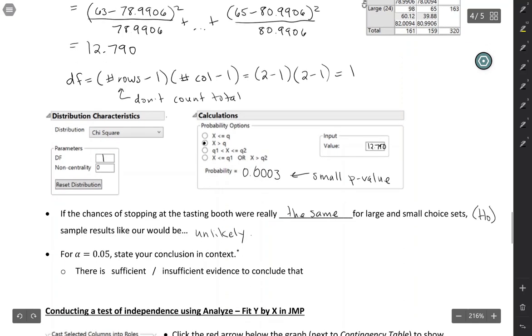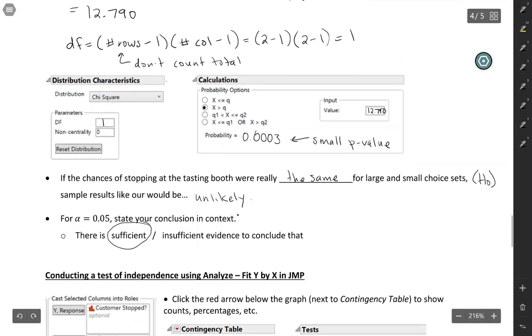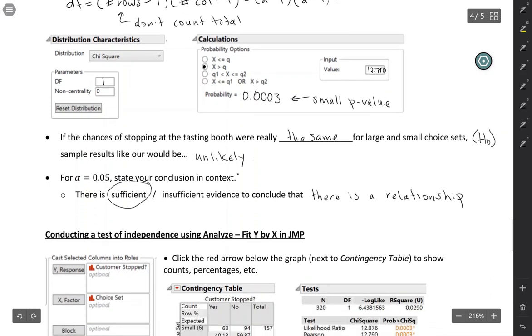Okay, so to conclude, since our p-value is smaller than alpha of 0.05, that means that we have sufficient evidence to conclude that there is a relationship. We're always trying to conclude the alternative hypothesis. So the alternative here is that there is a relationship